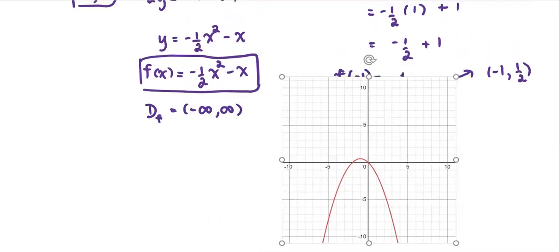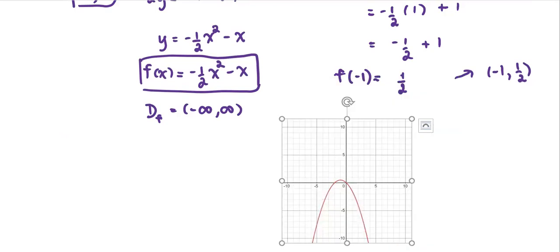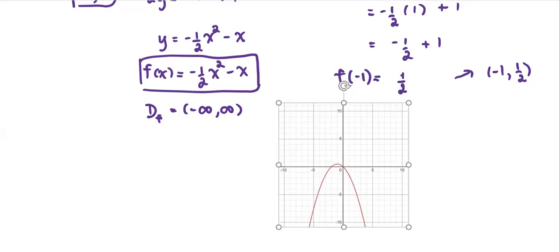And when we look at the graph of this function, it confirms the domain as the set of all real numbers. It could be any number as negative, positive, or 0. And the function value at negative 1 is the value 1 half.